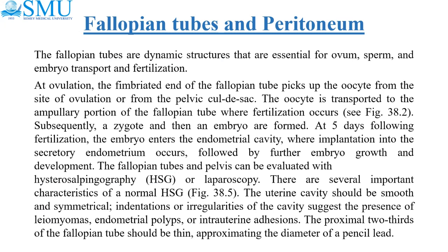The fallopian tubes are dynamic structures that are essential for ovum, sperm, and embryo transport and fertilization. At ovulation, the fimbrial end of the fallopian tube picks up the oocyte from the site of ovulation or from the pelvic cul-de-sac. The oocyte is transported to the ampullary portion of the fallopian tube where fertilization occurs. Subsequently, a zygote and then an embryo are formed. At five days following fertilization, the embryo enters the endometrial cavity where implantation into the secretory endometrium occurs, followed by further embryo growth and development.